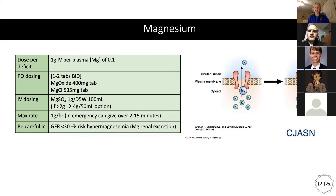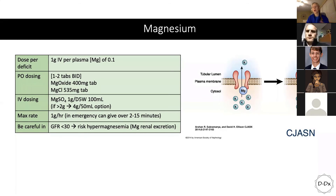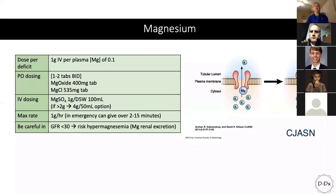For oral magnesium dosing, there are a few different options with different amounts of elemental magnesium — look it up on UpToDate, and there are great MDCalc tools for calculating the deficit. For IV dosing, which is mainly what you'll do in the hospital because magnesium can be tricky to absorb through the gut when someone is sick, you give 1 gram at a time per hour. At our institution, there's an option to give 4 grams in 50 mL to limit fluid given to patients with heart failure or hyponatremia.